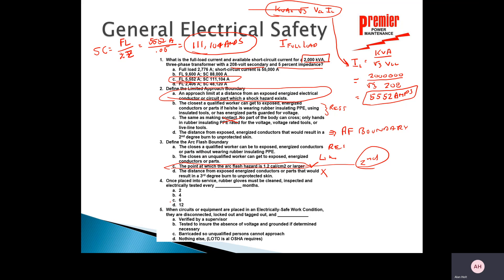Once placed into service, rubber gloves must be cleaned, inspected, and electrically tested every six months — that's the answer. And no more than 12 months from the date stamp on the cuff. So even if they sit in the bag and have never been issued, after one year they must be retested. Six months after the date of issue, but no more than 12 months after the date stamp.